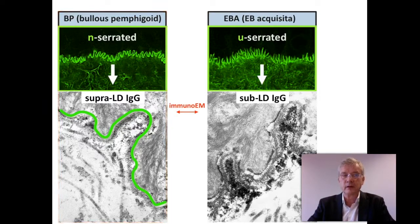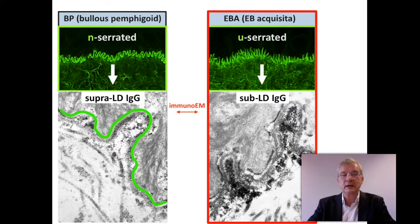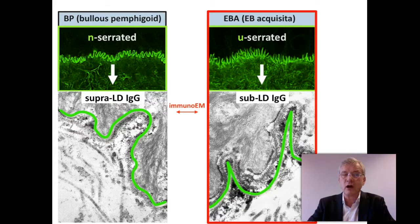The u-serrated pattern in EBA has a deposition below the lamina densa with a pattern of grass-like arms that looks like a u.